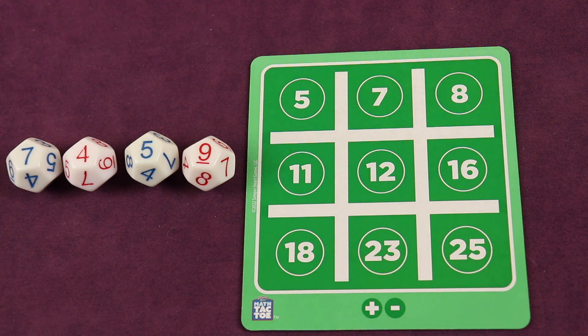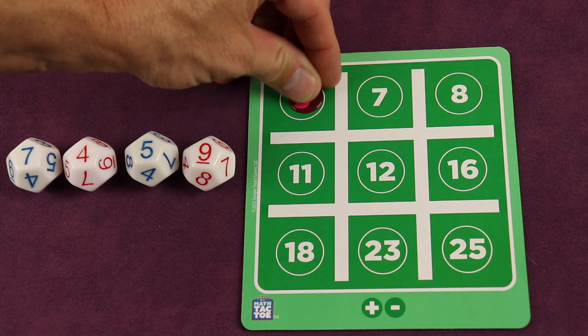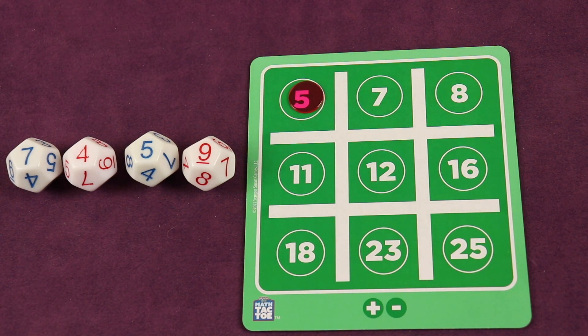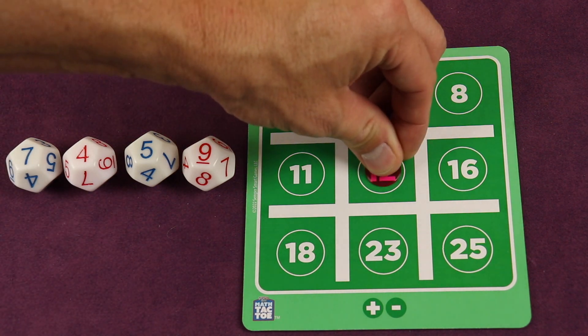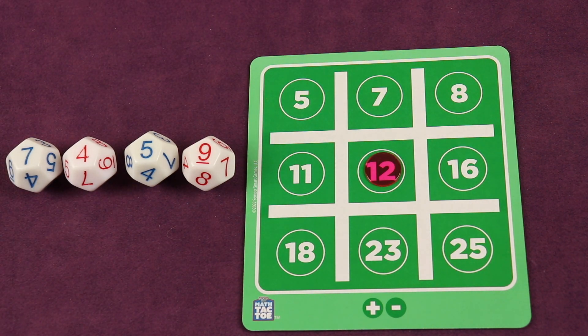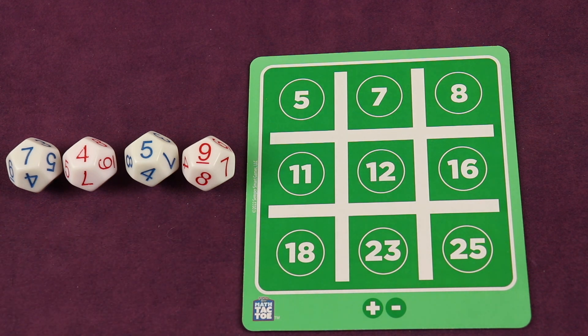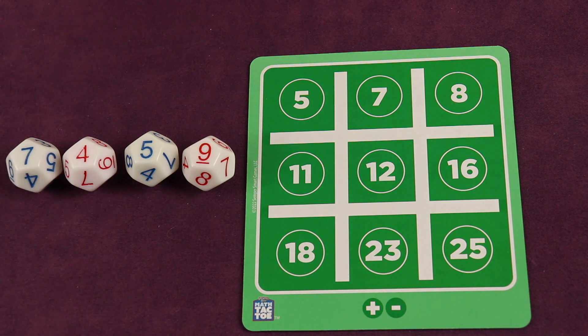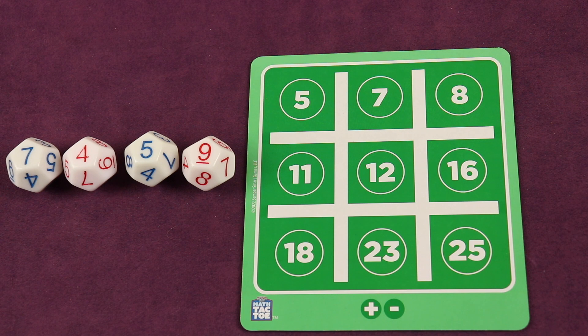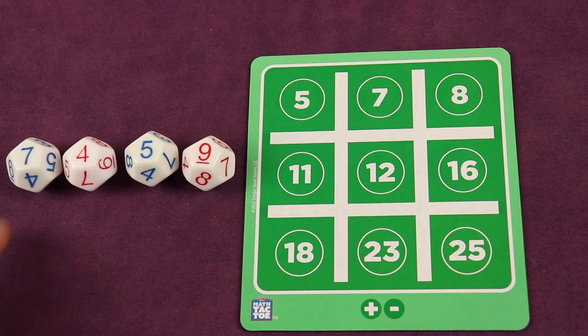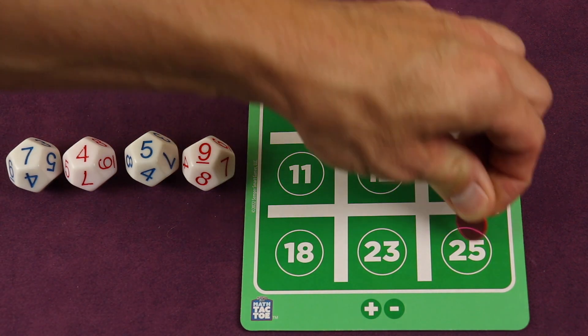So you might say nine minus four is five, and you could place your chip on five. Then it'll be the next player's turn—they roll the dice and try to place a chip. But there's possibly a better one: seven plus five is twelve, they can go in the middle instead because middle is great in tic-tac-toe. Or maybe you take seven plus five which is twelve, then minus four which is eight, and go there instead. Or you could use nine plus five is fourteen, plus four is eighteen, plus seven is twenty-five, and do something like this.